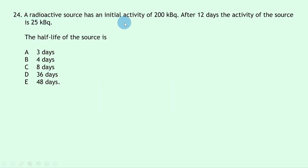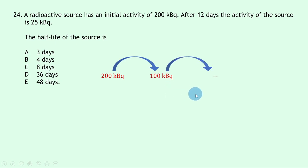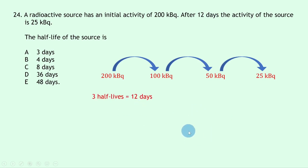Question 24: a radioactive source has initial activity 200 kBq; after 12 days activity is 25 kBq. Halving 200 → 100 → 50 → 25 kBq takes three half-lives. Three half-lives = 12 days, so one half-life = 12 ÷ 3 = 4 days — answer B.